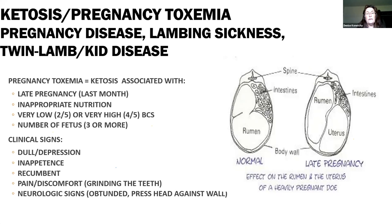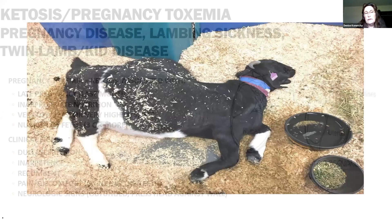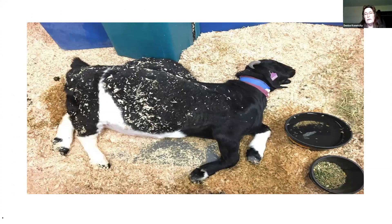Some of the clinical signs — the most common I see is late-term ewes and does that are a little bit dull, eating but not very robustly. They get recumbent and it's very difficult for them to get up. They may do some grinding of their teeth, which is a good indication something's not right. As they get further along into this disease process and become seriously hypoglycemic, we can actually see neurological signs — twitching, actual seizure activity, head pressing. This slide shows a doe in pretty severe ketosis that was comatose and paddling her front limbs.